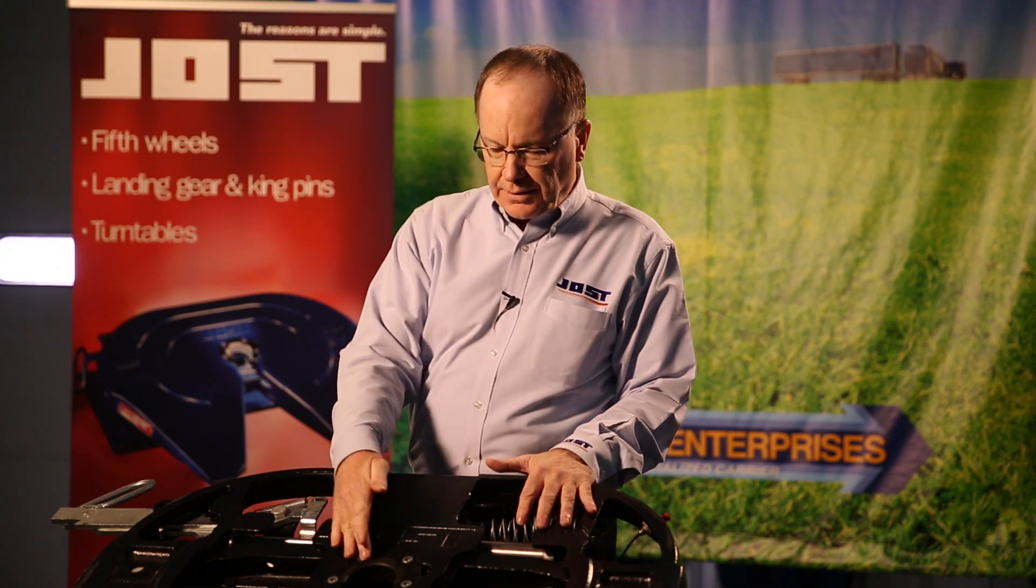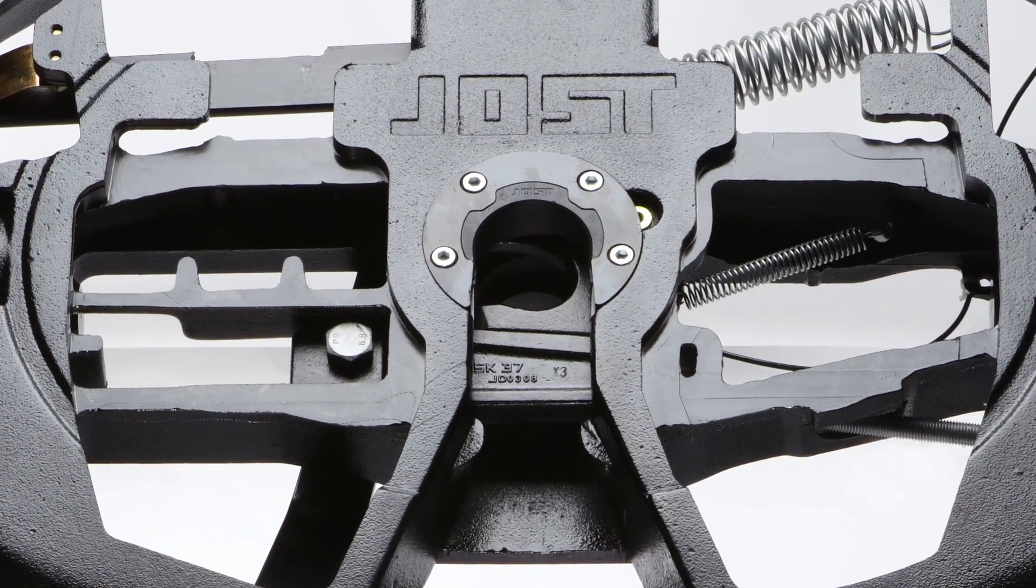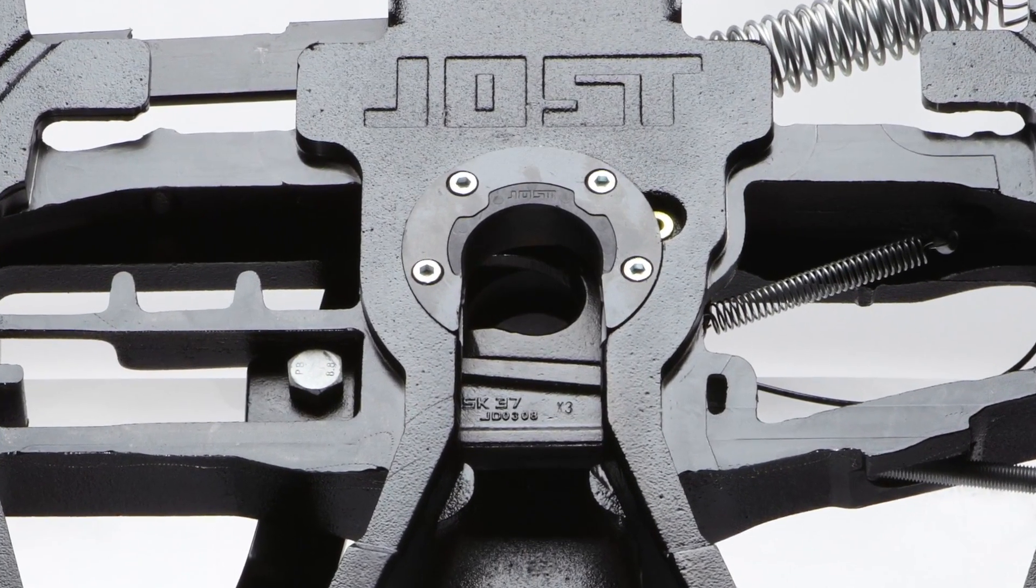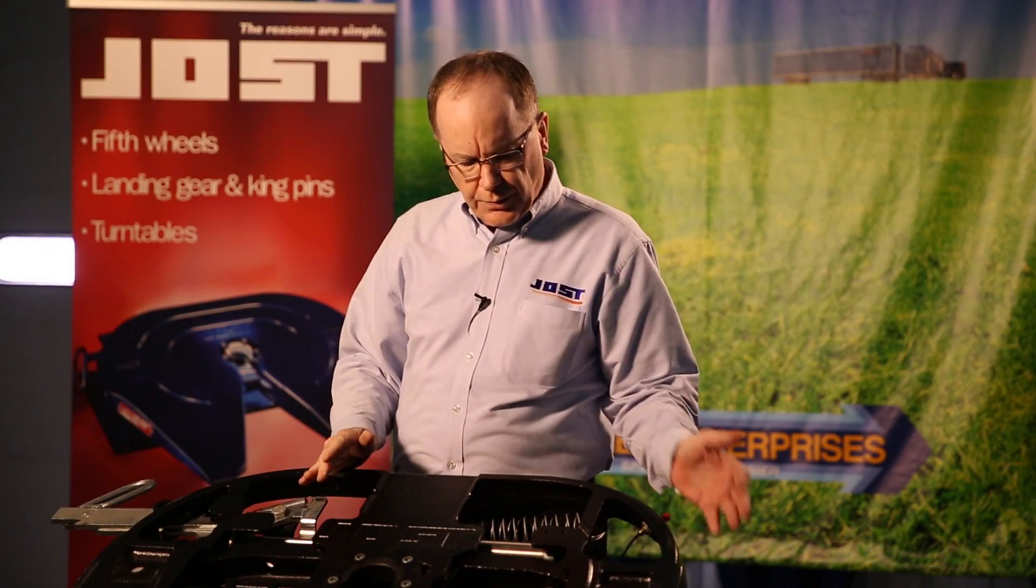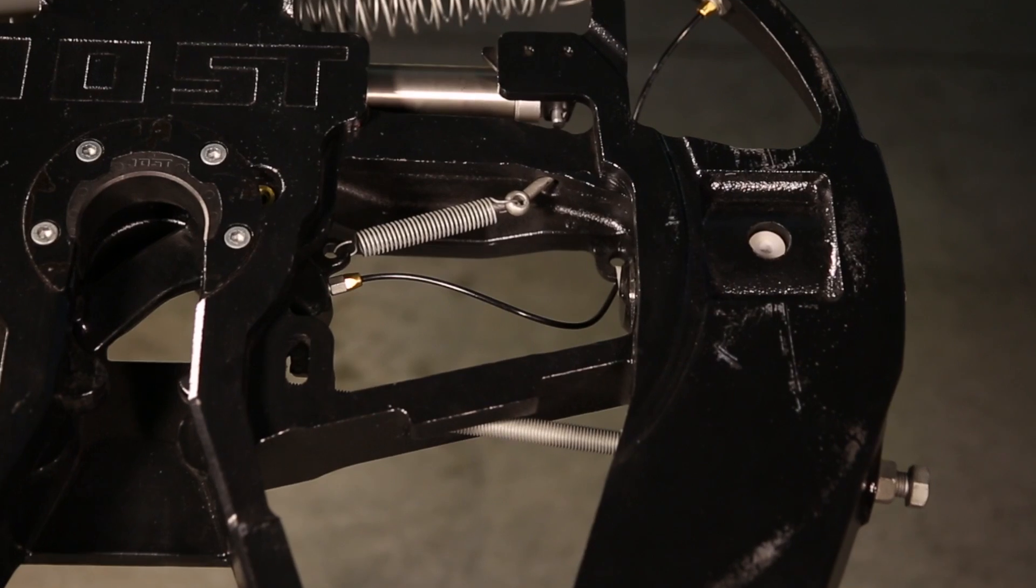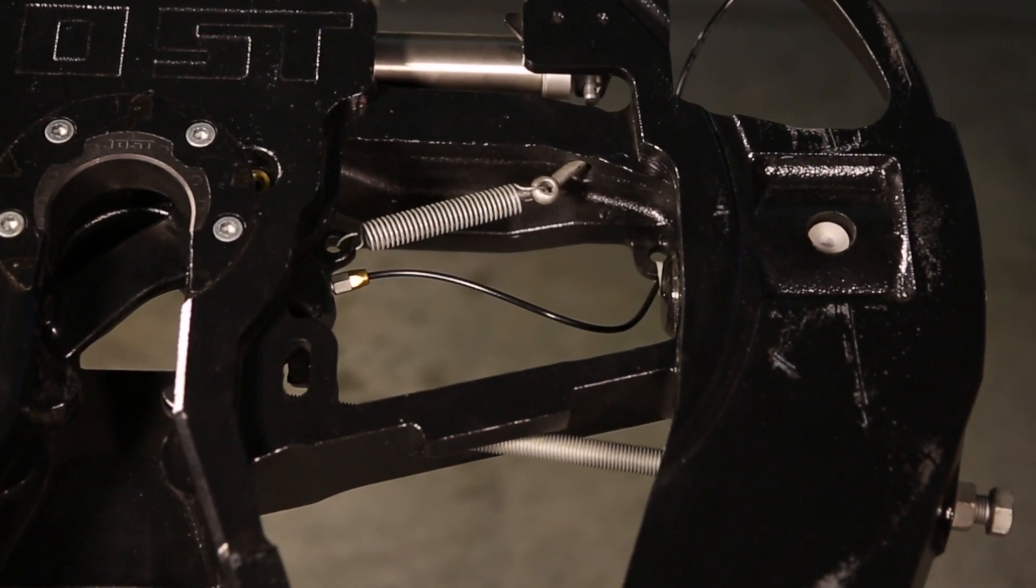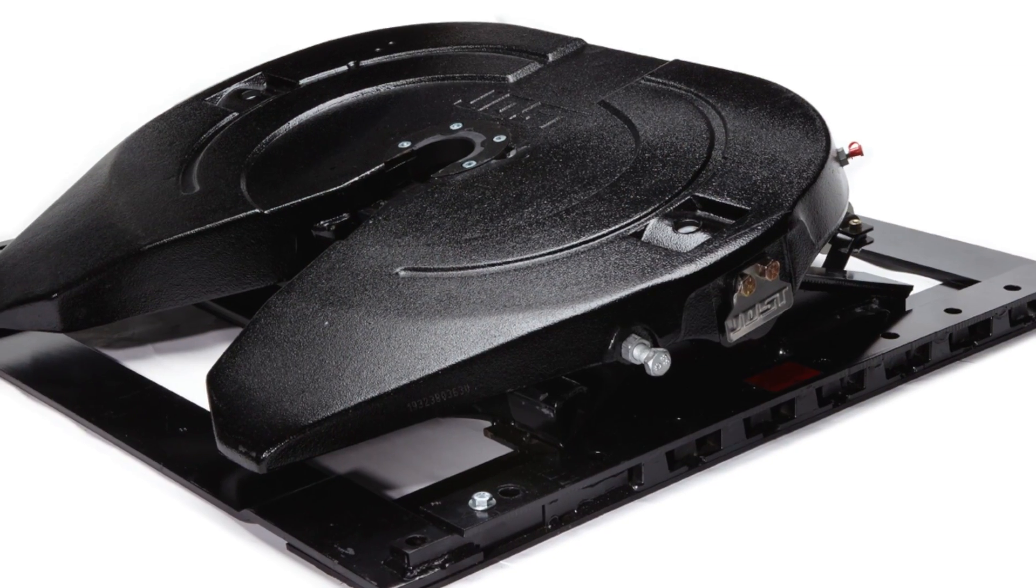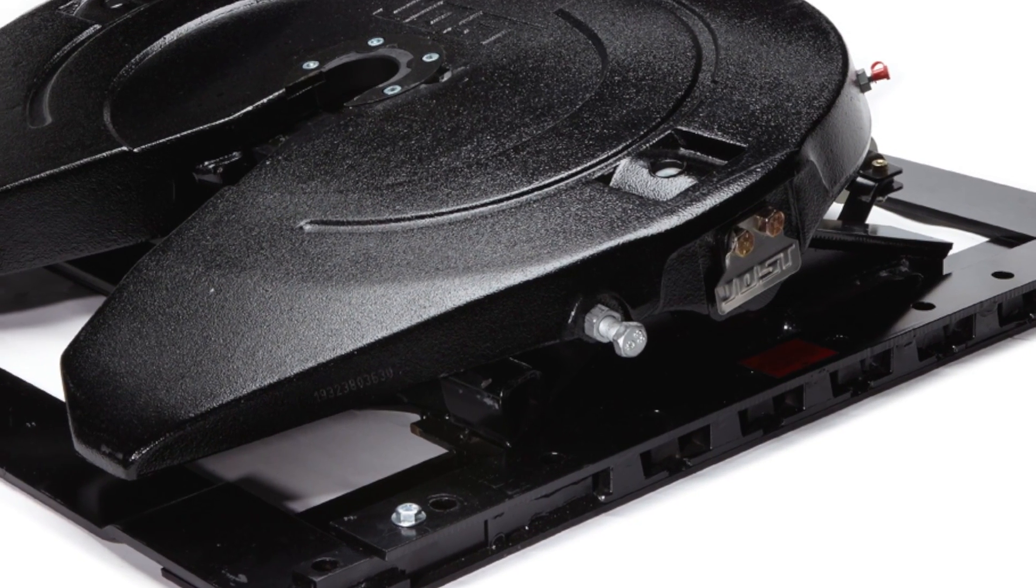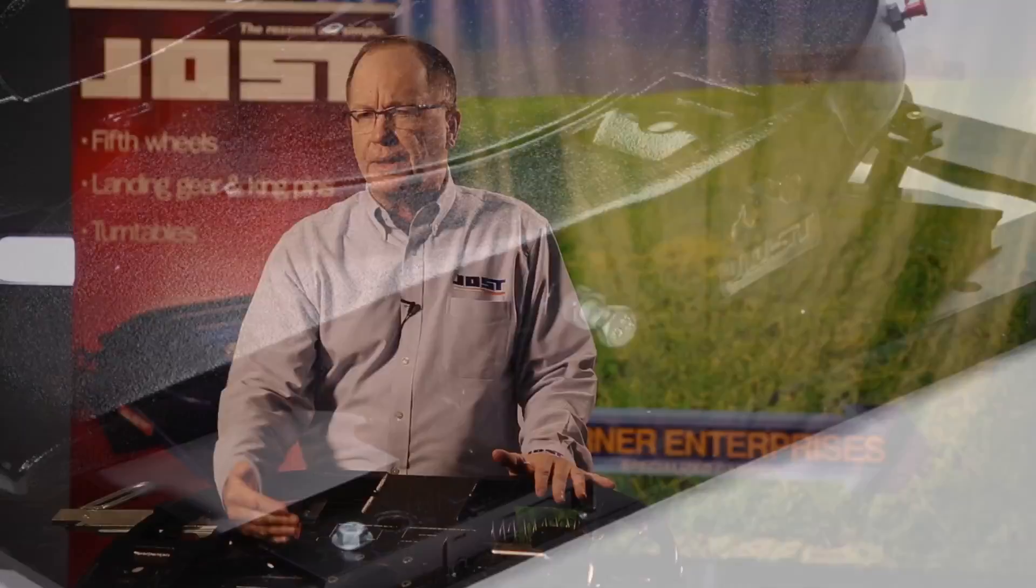Every Jost fifth wheel has a cushion ring that takes the impact of the kingpin during the coupling process, thus protecting the top plate from damage. We also have a remote grease zerk that allows you to deliver grease right through the jaw. The adjustment on a Jost is controlled by adjustment bolt at the side, which controls the travel of the lock bar.